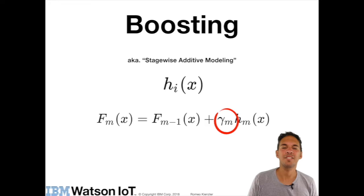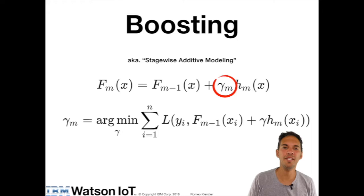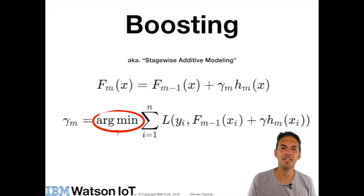So gamma m is a learned weight. And don't be scared, it looks a bit complicated, but it's relatively easy to understand how we derive gamma m. So we are taking the argmin. If you never have seen that notation, argmin means that we are optimizing or minimizing a function with respect to gamma.